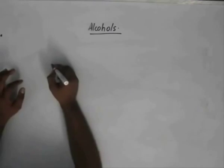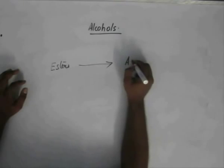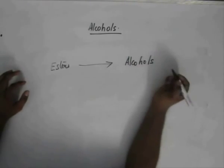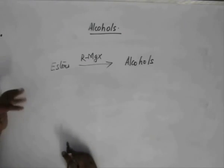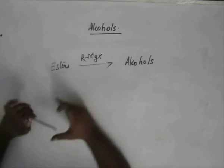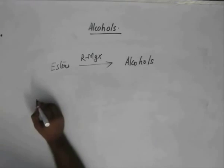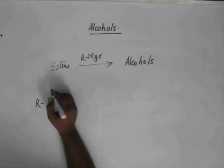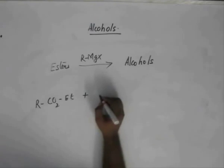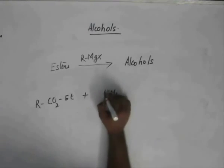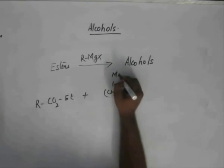Esters can be converted to alcohols when we use R-MgX. A very elegant way of preparing cyclic compounds is involved in this case where an ester, say RCO2Et, is used with maybe CH2, I take 5, and MgBr.